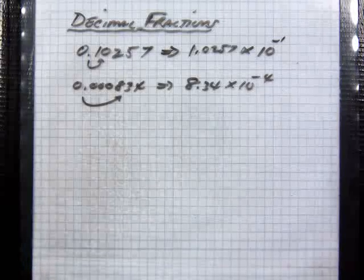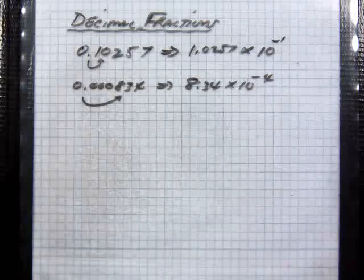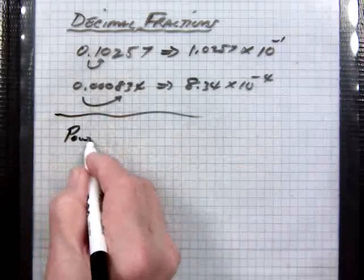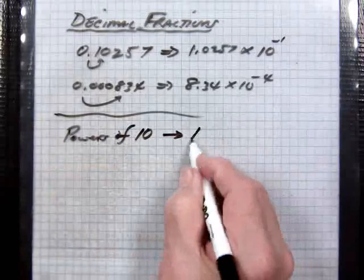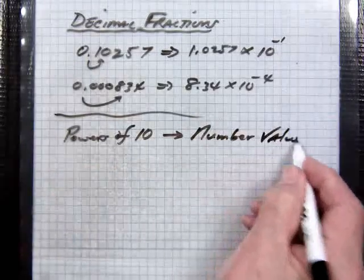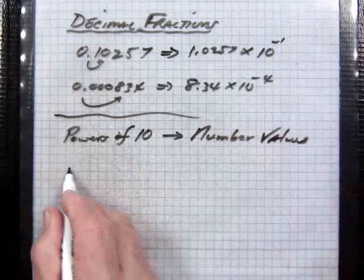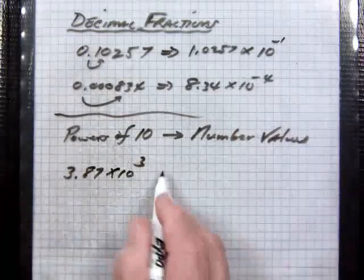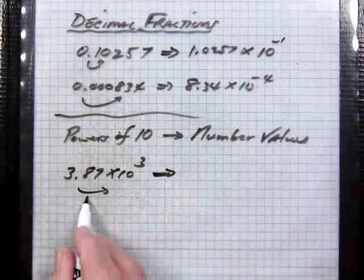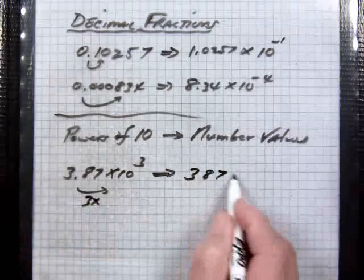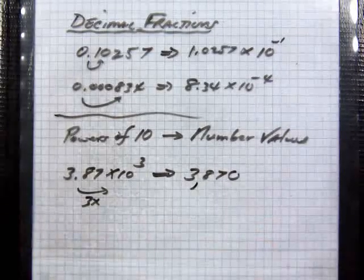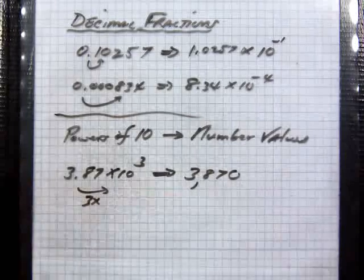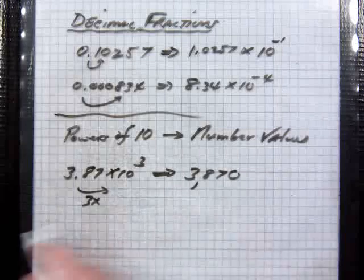Now, while we are putting numbers in powers of 10, you also want to be able to take powers of 10 and convert them back to numbers. So if you had 3.87 times 10 to the third power, where do you move that? Well, that would move the decimal place three places to the right, so that'd be 3870, and that would be your number. Now, you don't have to put a decimal in that, because you'd have to put another zero in, a trailing zero as they call them, and they're not significant.